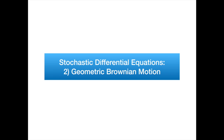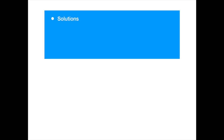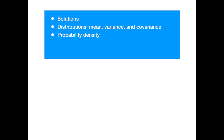Hello, and welcome to QuantPy. In the previous presentation, we analyzed the arithmetic Brownian motion SDE. We gave a step-by-step derivation of its solution, and we also covered its probability distributions, including mean, variance, and auto covariance. We then outlined with a real example how the process can be calibrated using historical data, and we showed how to simulate its paths and probability density.